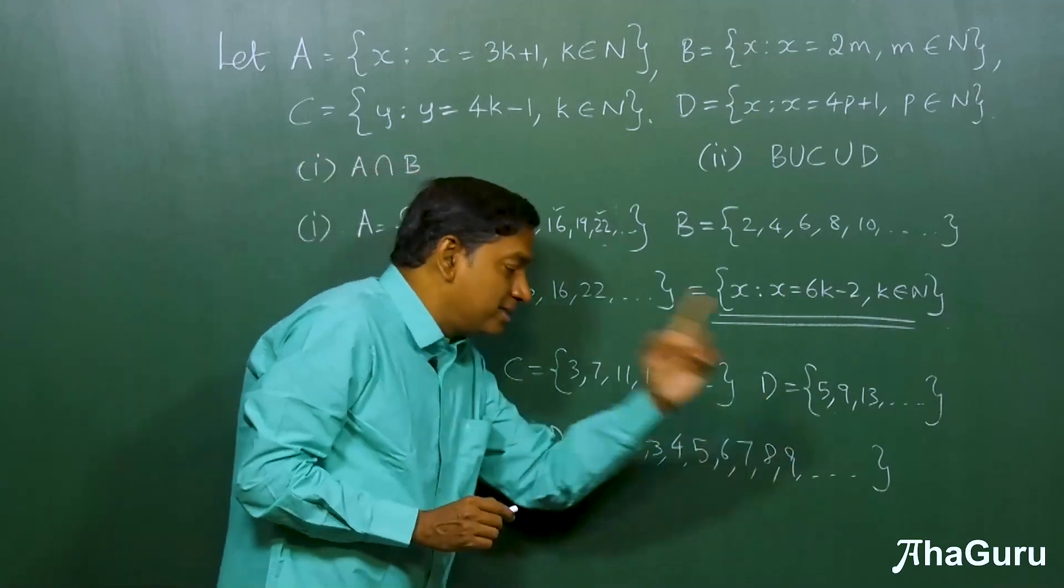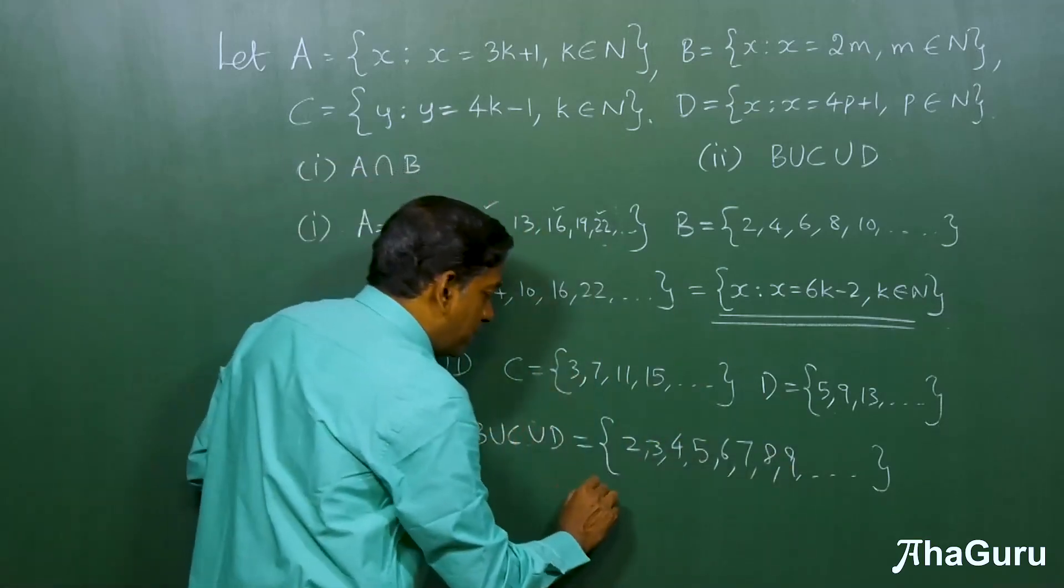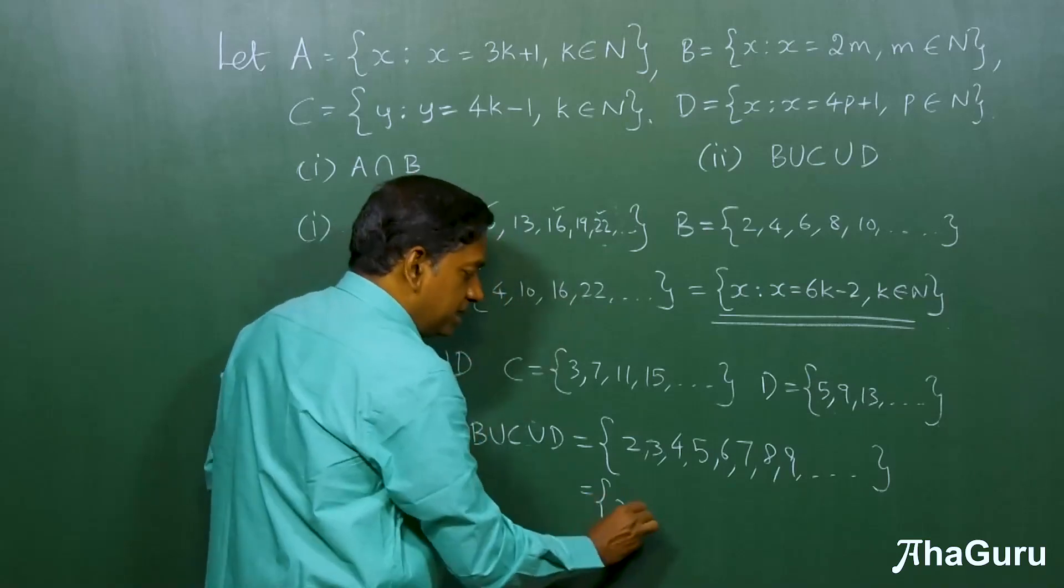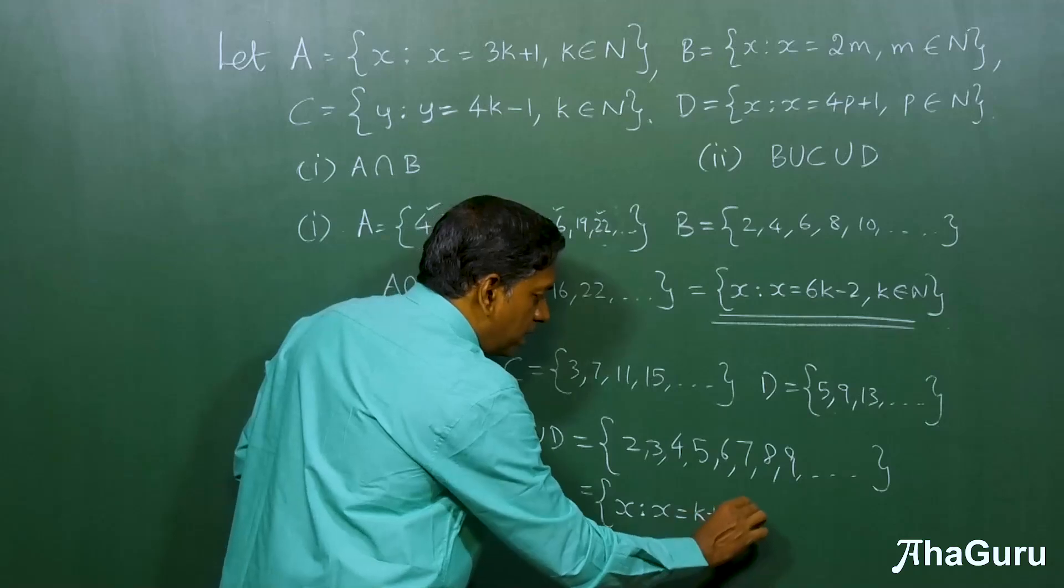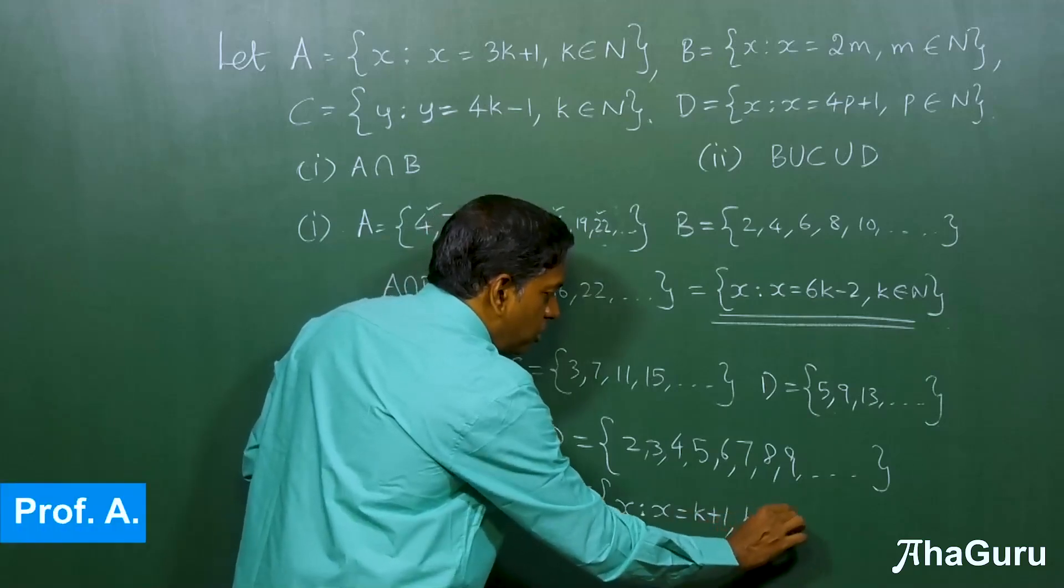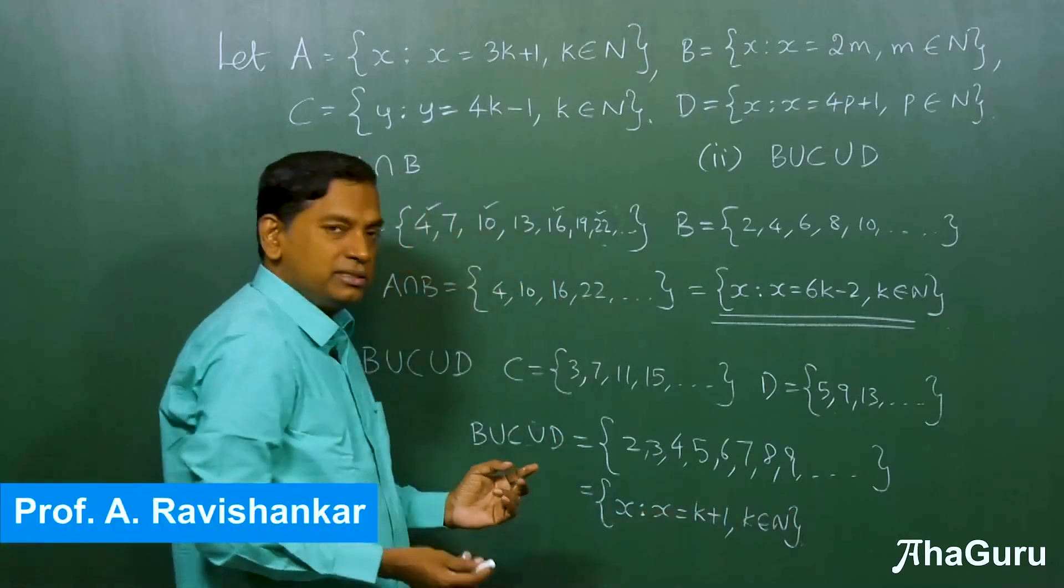So, how do we write this in set builder form? We could simply write this as, X such that, X is K plus 1 where K belongs to natural numbers. That's all.